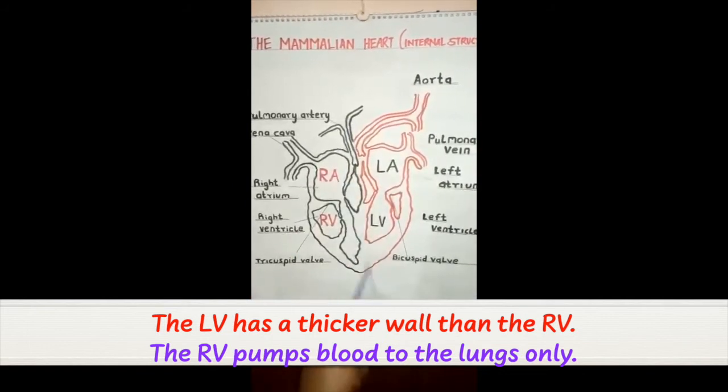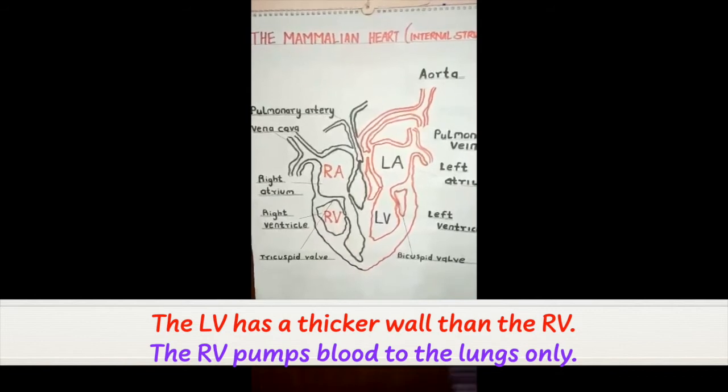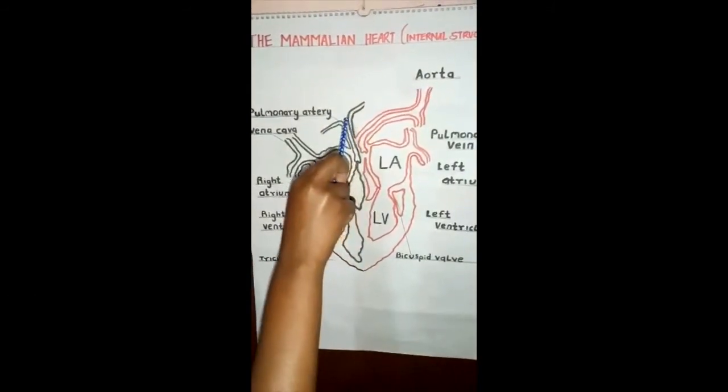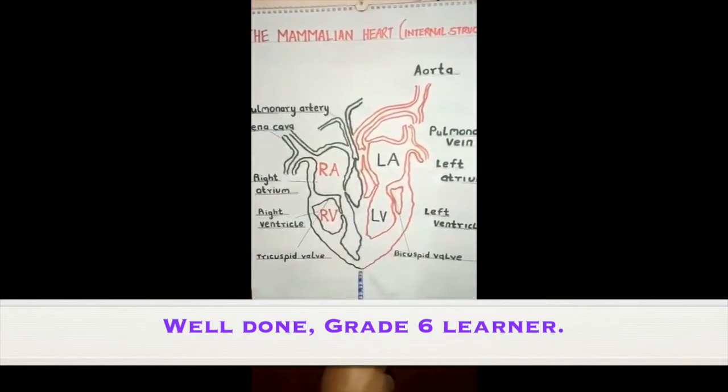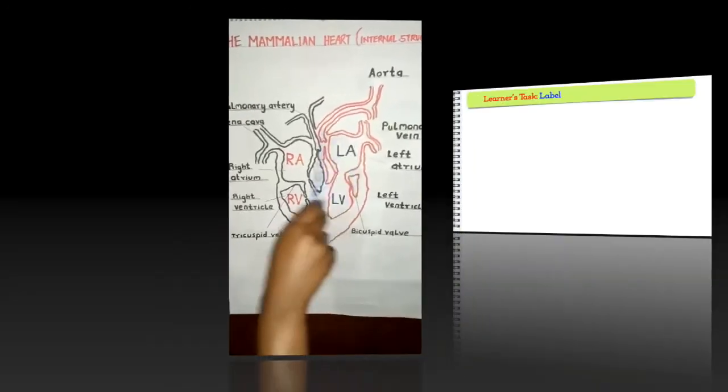Between the right side and the left side of the heart, there is a muscle known as the septum. This prevents the oxygenated blood from mixing with the deoxygenated blood.